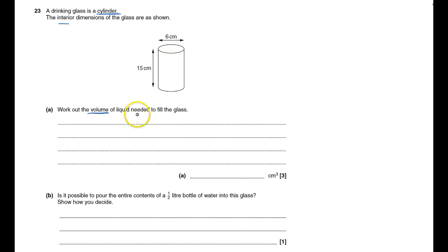We'll work out the volume needed to fill the glass. So volume, what we call the area of the cross section, that'll be the circle. And then I have to times it by the length, which will be timesing it by 15. So I need to work out the area of the cross section.